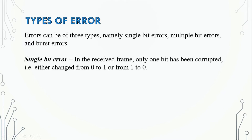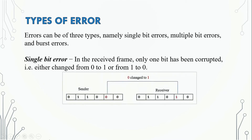First, we will see single bit error. In this type, only one bit is corrupted. For example, the sent data is 0, 1, 0, 0, 0, but due to a transmission error, one bit is changed — so what was a 0 becomes a 1.